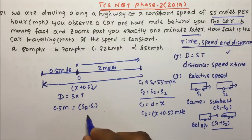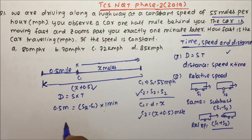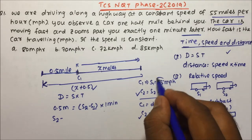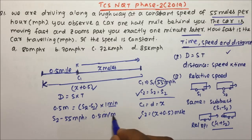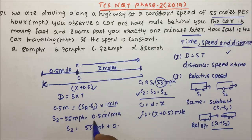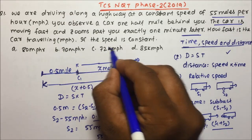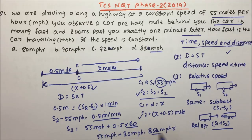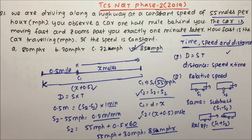Car two's speed is more, and the time is one minute. Using Distance = Speed × Time: 0.5 miles = (S2 − S1) × 1 minute. S1 is 55 miles per hour, so S2 − 55 = 0.5 miles per minute, which is 30 miles per hour when multiplied by 60. Therefore S2 = 55 + 30 = 85 miles per hour. So option D, 85 miles per hour, is the correct answer for question number 1.